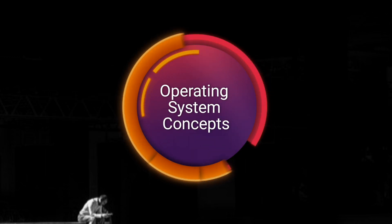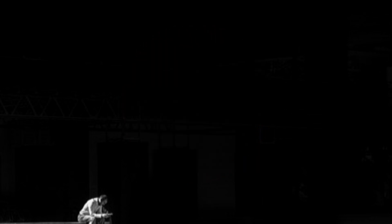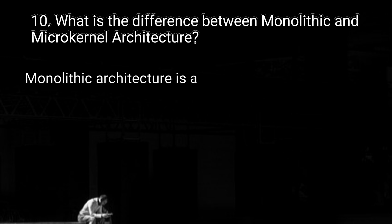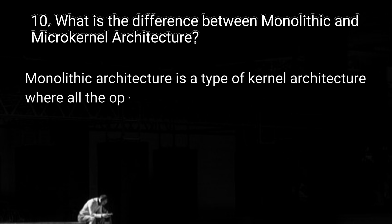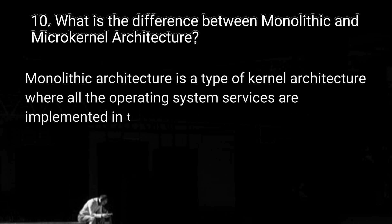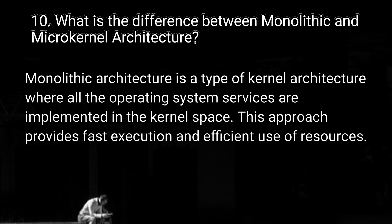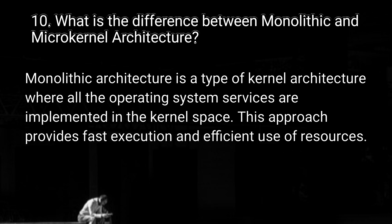Moving on to the fourth section: operating system concepts. Question number 10: what is the difference between monolithic and microkernel architecture? Monolithic architecture is a type of kernel architecture where all the operating system services are implemented in the kernel space, providing fast execution and efficient use of resources. Microkernel architecture, on the other hand, breaks the kernel down into smaller components where each component runs in user space.